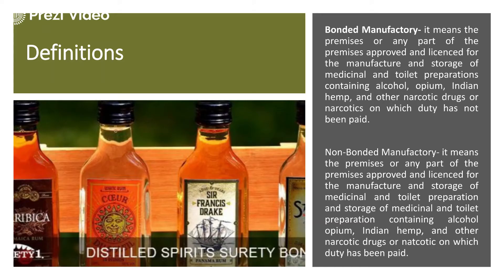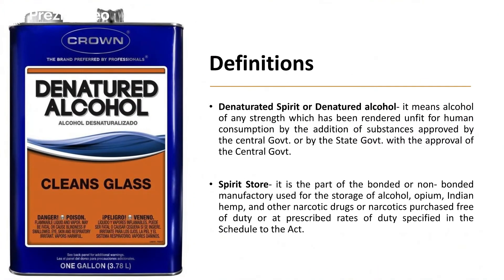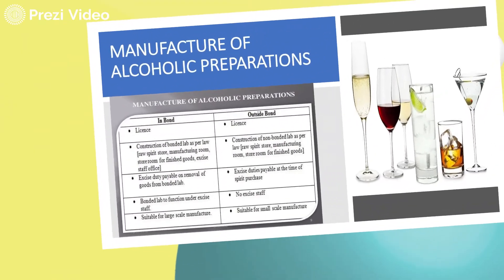The basic difference is: in bonded manufacturing, the duty has not been paid; for non-bonded manufacturing, the duty has been paid. Another important definition is denatured spirit or denatured alcohol — alcohol of any strength rendered unfit for human consumption by the addition of certain substances approved by the central government or by the state government with central government approval. The spirit store is the part of the bonded or non-bonded factory used for storage of alcohol, opium, Indian hemp, or other narcotic drugs purchased free of duty or at a prescribed rate as specified in the schedule to the act.